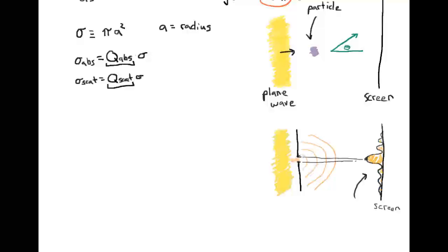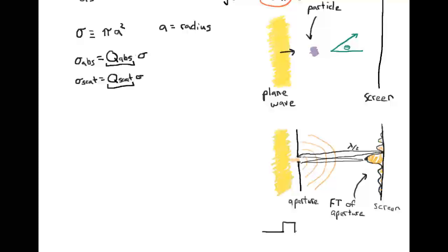That interference pattern comes from the fact that at the peak, we have the same distance to either side of the aperture, so the wave fronts add up in phase. In other places, the difference in path length from one side to the other means the wave fronts add up out of phase, canceling each other out. The result is an interference pattern that is the Fourier transform of our aperture — for a square aperture, a sinc function (sin(x)/x), and the wider the aperture, the narrower the interference pattern.